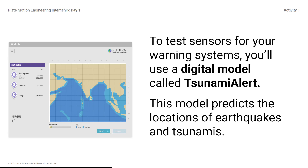A model is an object, diagram, or computer program that helps us understand something by making it simple or easier to see. For example, at Futura, you will be using a computer simulation to test your designs. Engineers use models like Tsunami Alert to predict what will happen — they can change variables and see what outcomes happen as a result.